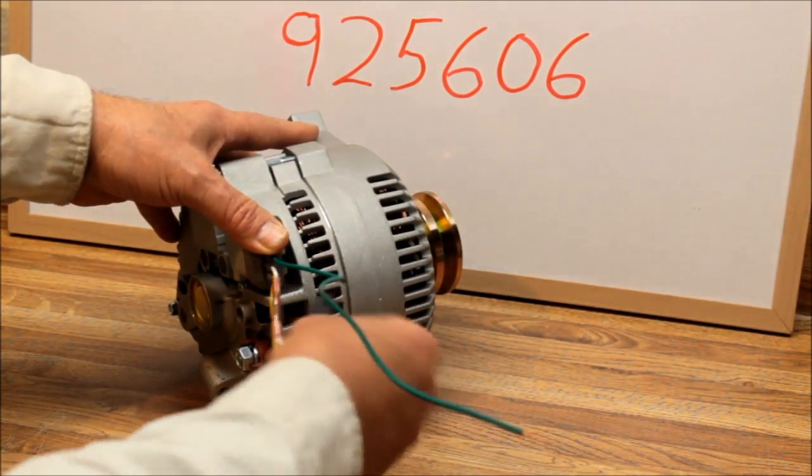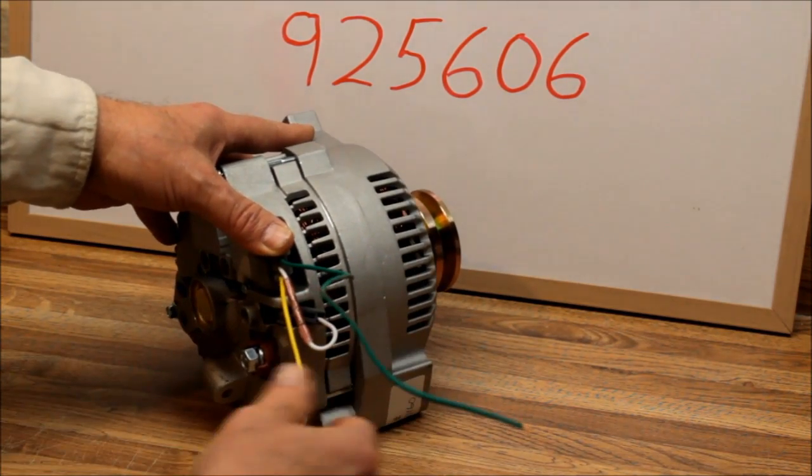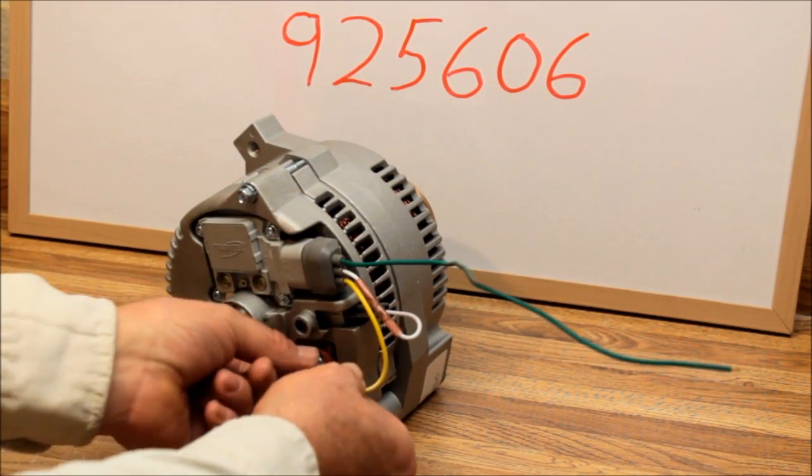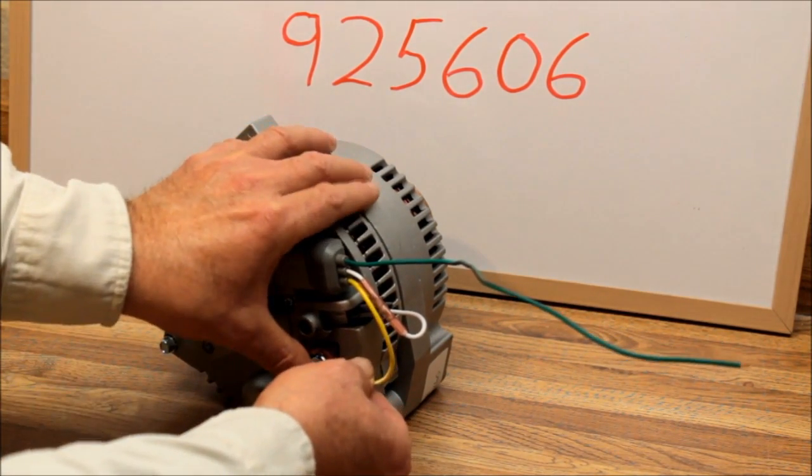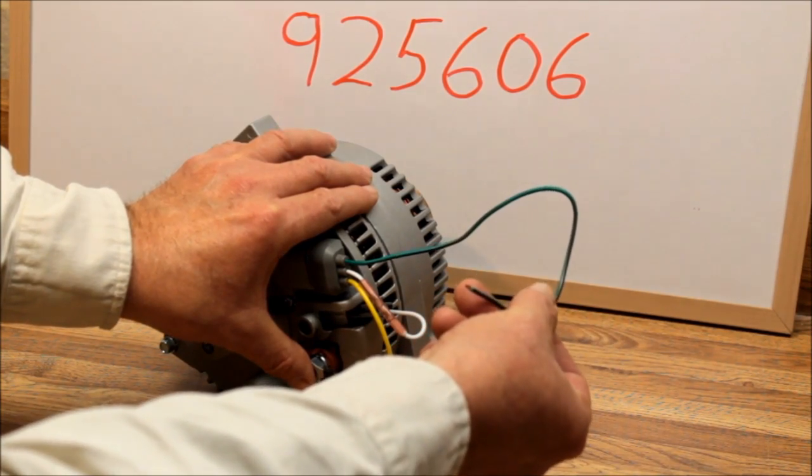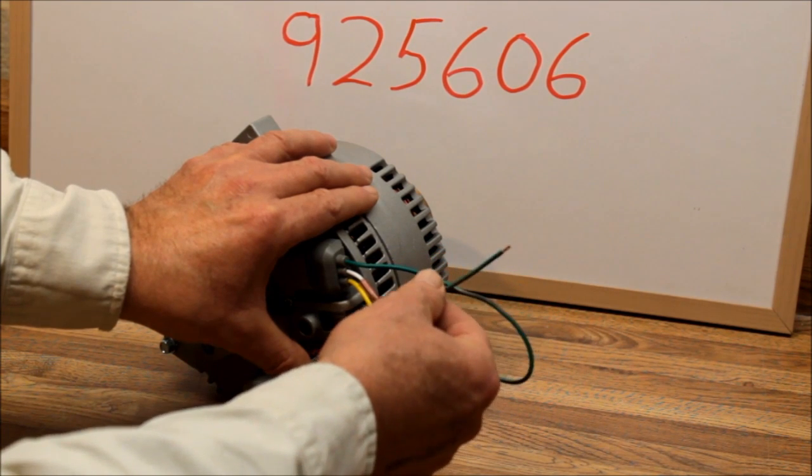Then the second little plug gets plugged in down here in this other position. Then all you have to do is this little wire gets put on your main battery post on the back. Then all you have to have is one ignition wire to activate this alternator.